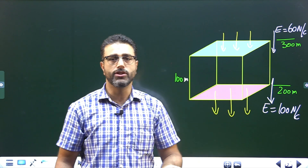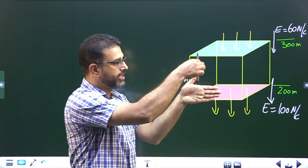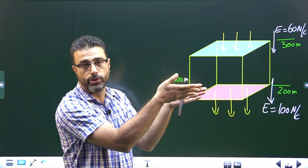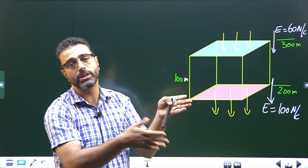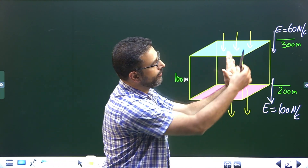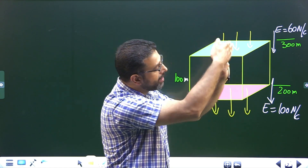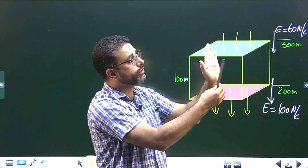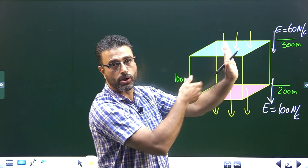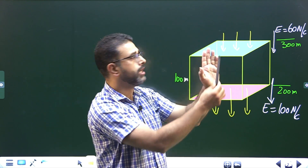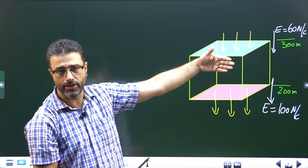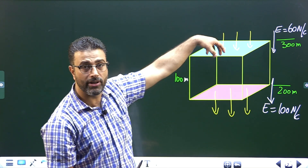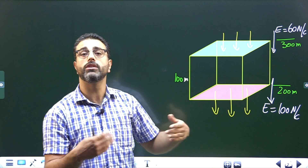For the other faces, flux is zero. The front face — field is directed vertically downward, so field lines are parallel to that face. No field lines are crossing through it, which means flux is zero. Same goes for the right face, left face, and back face — flux is zero everywhere else. Flux is only contributed by the top face and the bottom face.